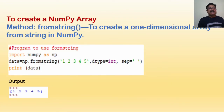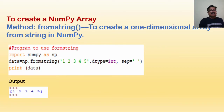Next is the method to create a NumPy array from a string. To create a one-dimensional array from a string in NumPy: data = np.fromstring('1 2 3 4 5', dtype=int). The separator has been given as a space and the output is one two three four five.